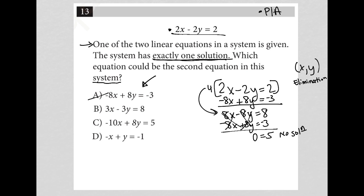I can do the exact same thing for choice B: 2x minus 2y equals 2 and 3x minus 3y equals 8. Here I'd multiply the top by 3 and the bottom by maybe let's say negative 2. Therefore I would get 6x minus 6y equals 6 and negative 6x plus 6y equals negative 16.